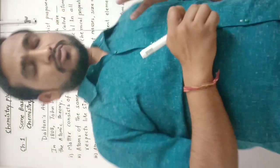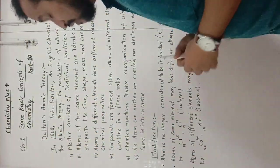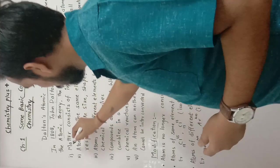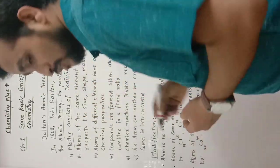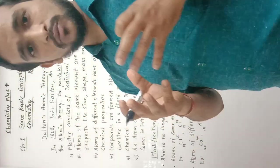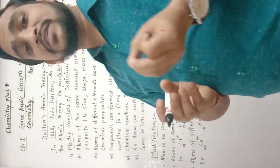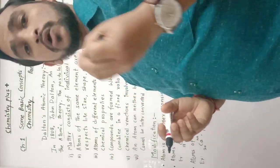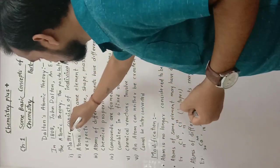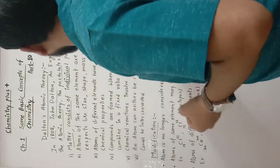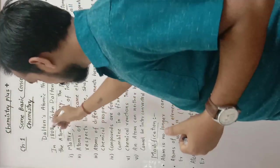The postulates proposed by John Dalton — the very first postulate is: matter consists of individual particles. According to him, all matter consists of individual smaller particles called atoms, meaning an element consists of single particles called atoms.